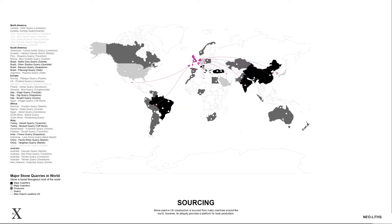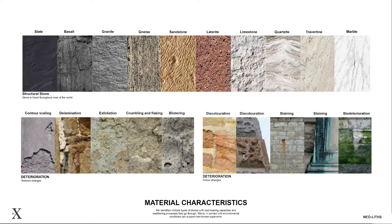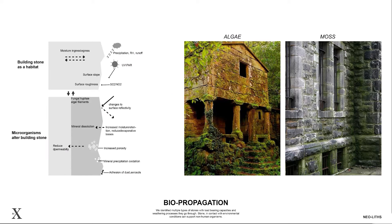Stone is available on every continent in the world; thus, it can be sourced locally. It can last for hundreds of years and outlive other materials. It has a propensity for biopropagation, which can promote the growth of non-human organisms like algae and moss.